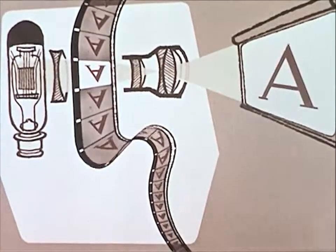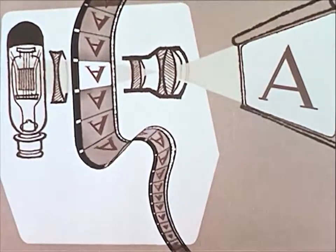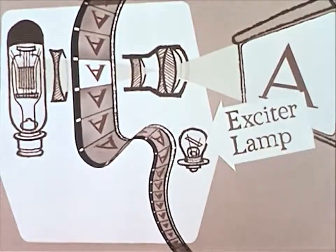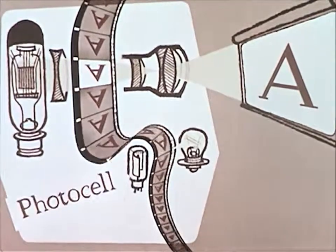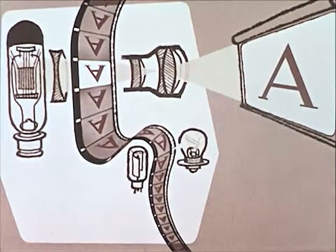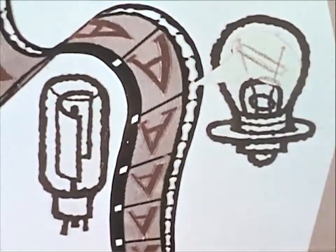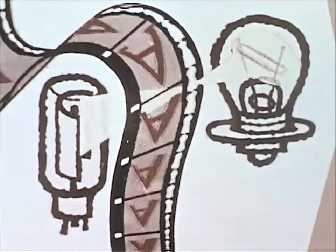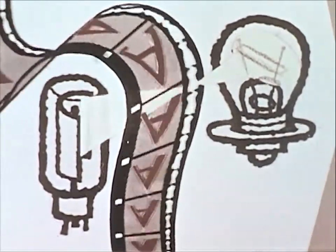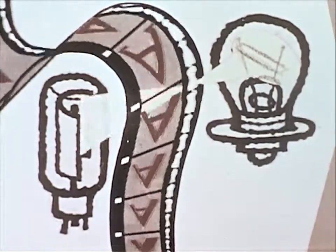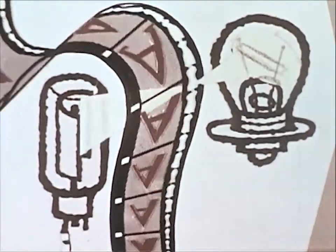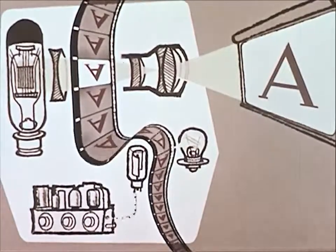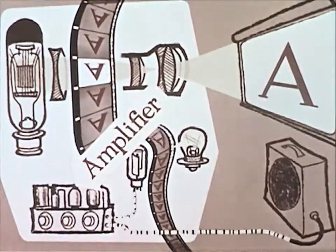Next, the film enters the sound section. Here, an exciter lamp passes light through the soundtrack area of the film. This light is received by the photo cell. Sound waves, which have been recorded as variations of light and dark areas on the film, cause the light beam reaching the photo cell to vary in brightness. When the film moves, the photo cell produces electrical pulsations corresponding to the original sound, which are then amplified and fed to the speaker.